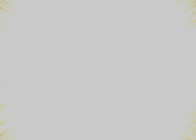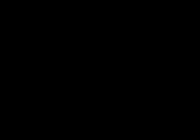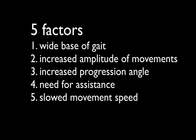So the next time you're thinking about a gait problem, think about how proprioception may be involved — our ability to coordinate ourselves in space. Think about the five factors: a widened base of gait for stability, an increased amplitude of movement because we don't have stability, an increased progression angle to create a more stable base and a larger triangle, the need for assistance because we don't have the stability we need, and a slowed speed of movement to help the nervous system compensate well.